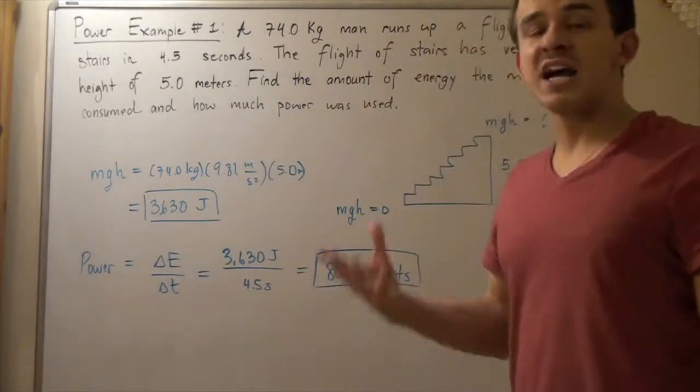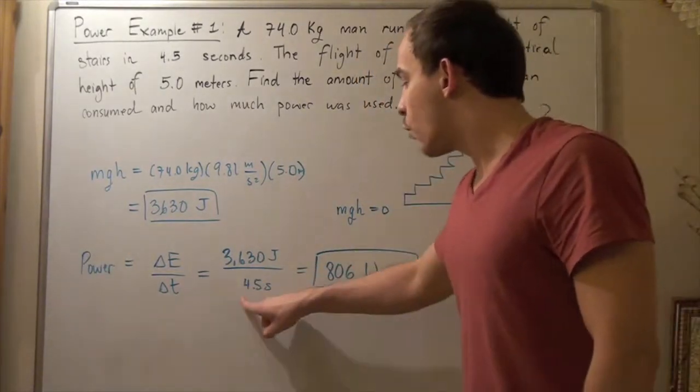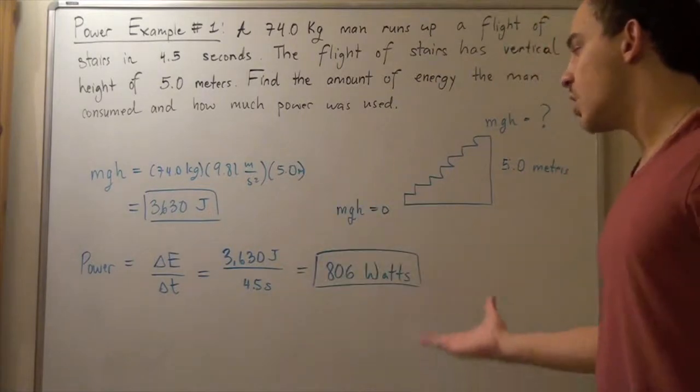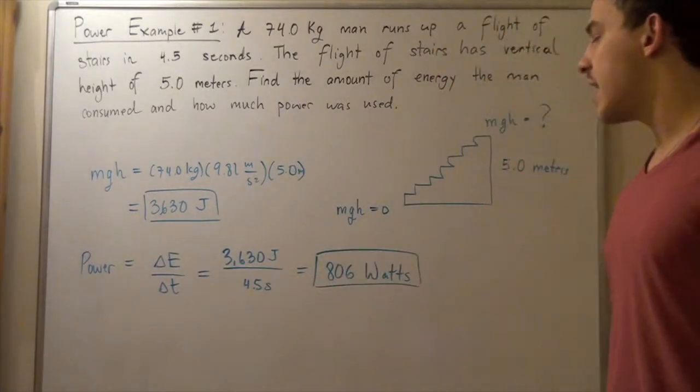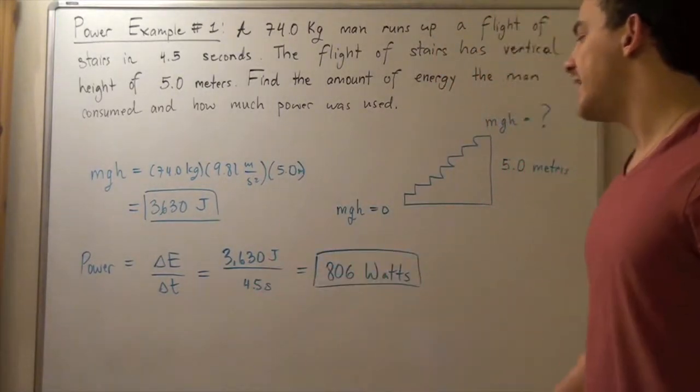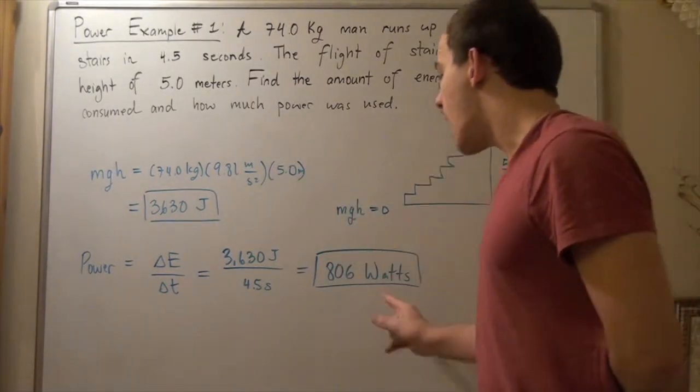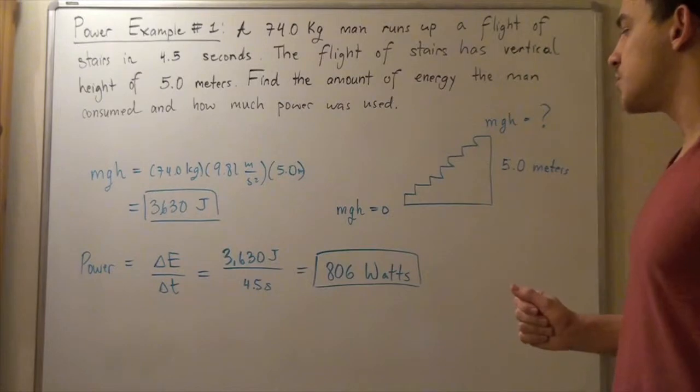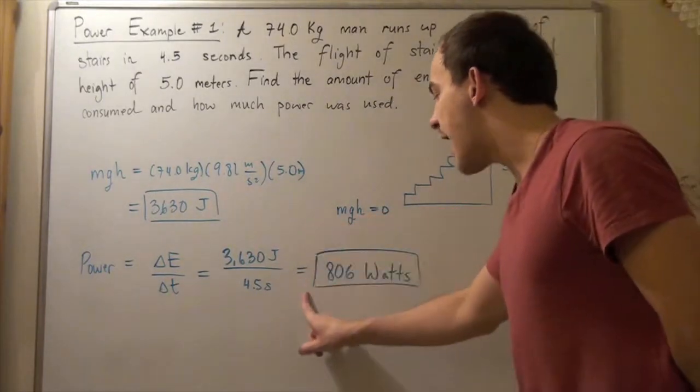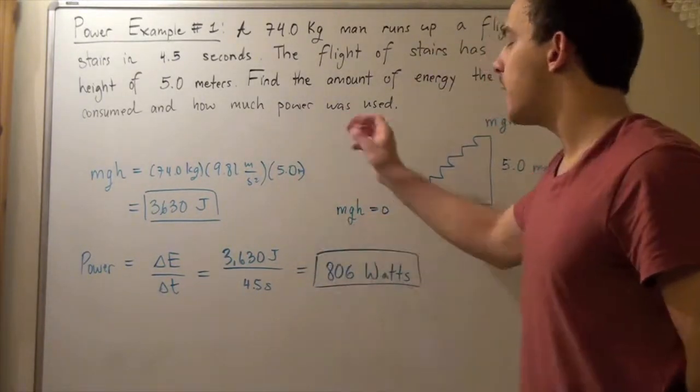The amount of time elapsed is 4.5 seconds minus zero which is simply 4.5 seconds. We divide the two, we get approximately 806 watts which are simply joules per second. This is the power output of our man.